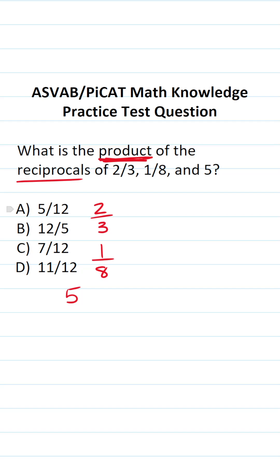To find the reciprocal of two-thirds, we're just going to exchange our numerator and denominator. The reciprocal of two-thirds is going to be three over two, and I'm going to circle it to remind myself that that is the reciprocal.